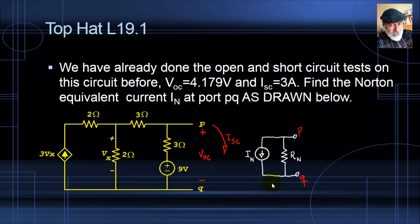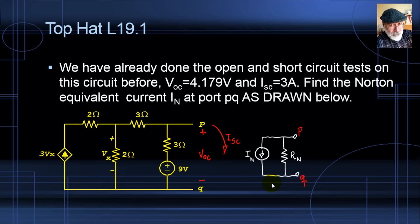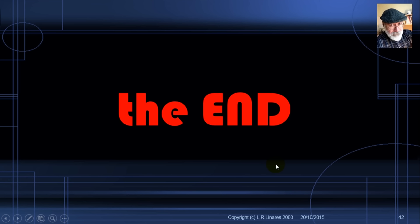I leave with you a couple of exercises for practice. We have already done the open and short circuit test on the circuit, given VOC and I_SC. Find the Norton equivalent current I_N at port PQ as drawn — please observe the direction for the Norton current in the equivalent. And another exercise: find the value of the Norton resistance at the port. Thank you very much, and I hope you enjoyed this video as much as I did preparing it. I hope to meet you again in our next video.